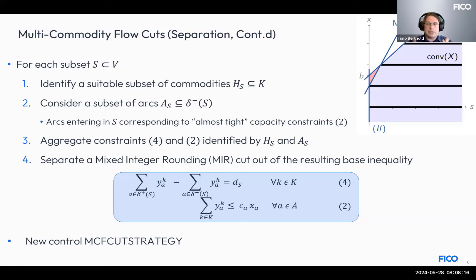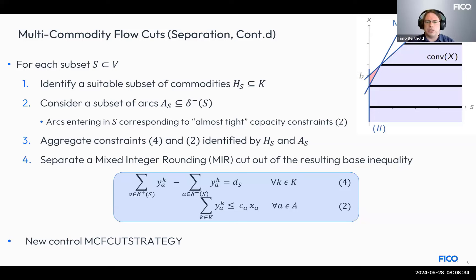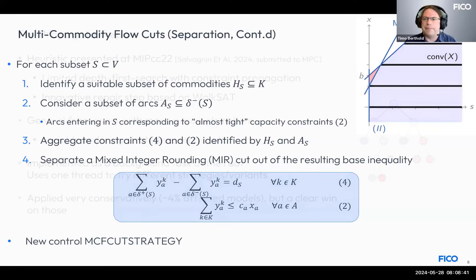The art in MIP is aggregating the right constraints to create strong cuts from the detected multi-commodity flow structure. These cutting planes are now enabled by default at the root node — not in the tree. A new control, MCFCutStrategy, lets you adjust whether cuts are applied only at the root node or also during branch-and-bound tree search. If your model features such structures, this is worth a try.